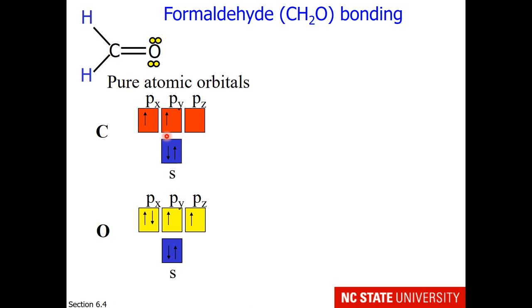I'll start with formaldehyde. Before knowing anything about what this looks like in three-dimensional space, this molecule has a sigma bond between carbon and hydrogen, a sigma bond between the other carbon and hydrogen, a sigma bond between carbon and oxygen, and one pi bond. This is what I will attempt to build for you now.